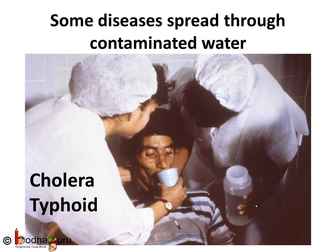In some countries, drinking water is scarce. If excreta of a person who is suffering from infectious gut disease gets mixed in water of a lake or pond, then that water gets contaminated. If anyone drinks that water, he gets the disease. Cholera spreads very fast in African countries this way.